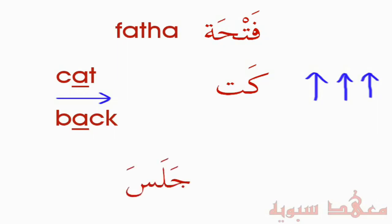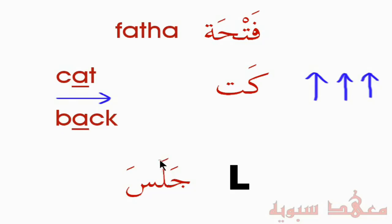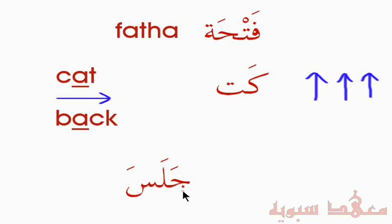Let's practice. We have a word in Arabic with three letters. The first is the Jeem, which has the J sound — like in 'jeep,' 'jog,' or 'Jupiter.' There's a Fatha on it, so it's pronounced 'Ja.' Then we have the Lam, equivalent to the letter L in English — with the Fatha, it's 'La.' Finally, we have the Seen, equivalent to the S sound — with the Fatha, it's 'Sa.' So together: Ja-La-Sa, which means 'he sat.'